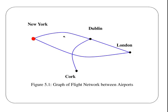First off, we have these points here: Dublin, New York, Cork, and London. The points we're going to call vertices.